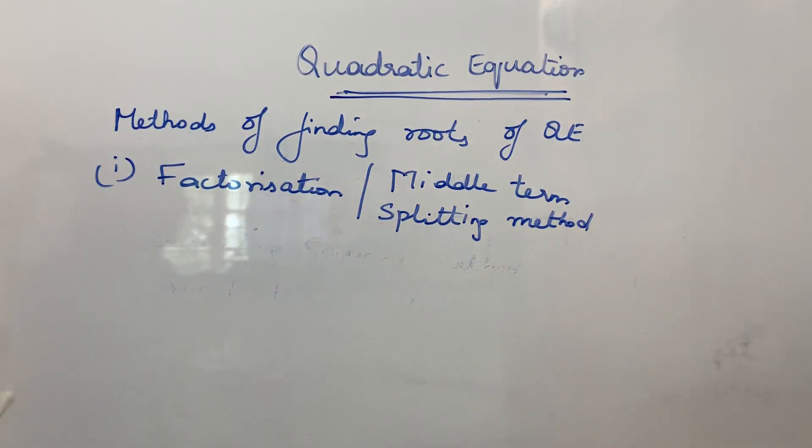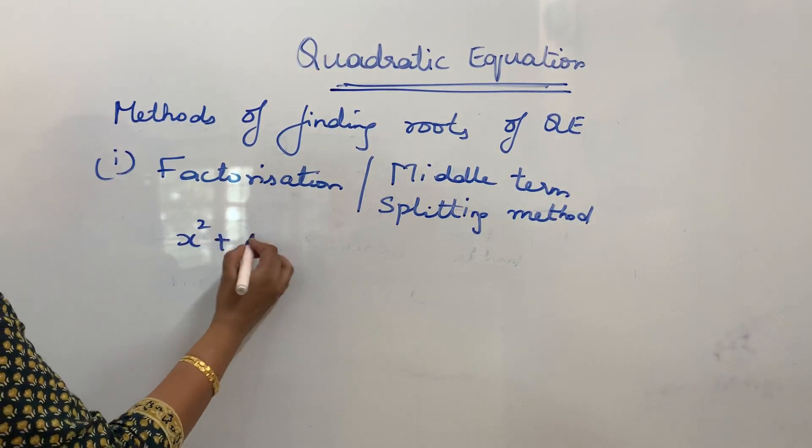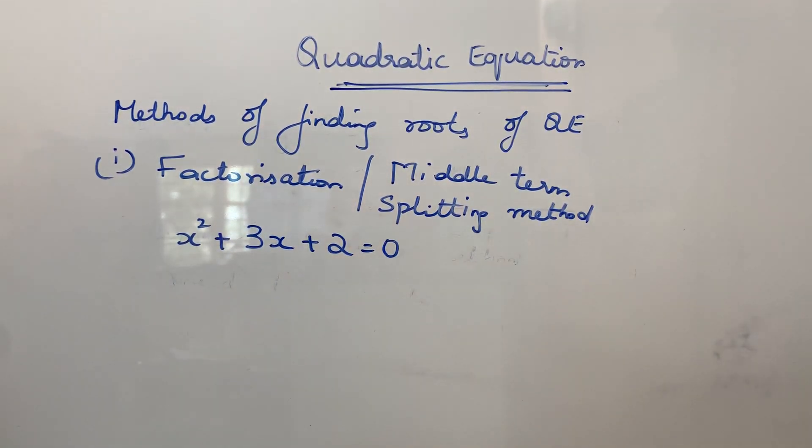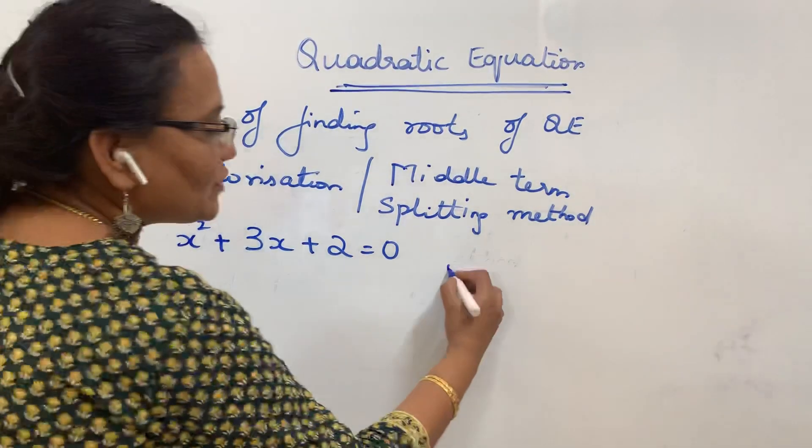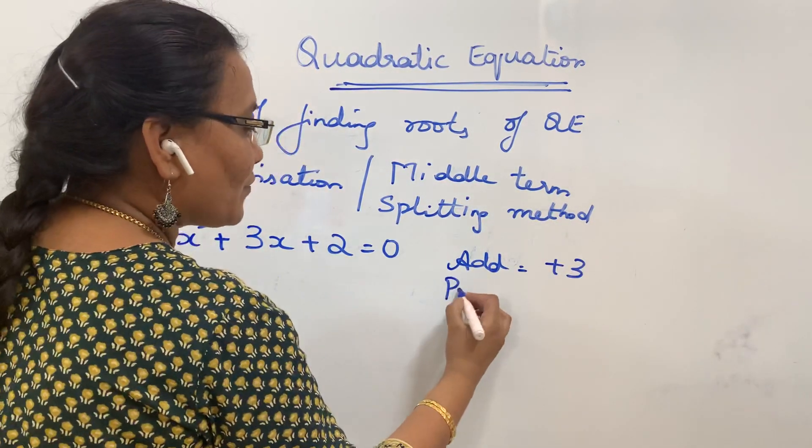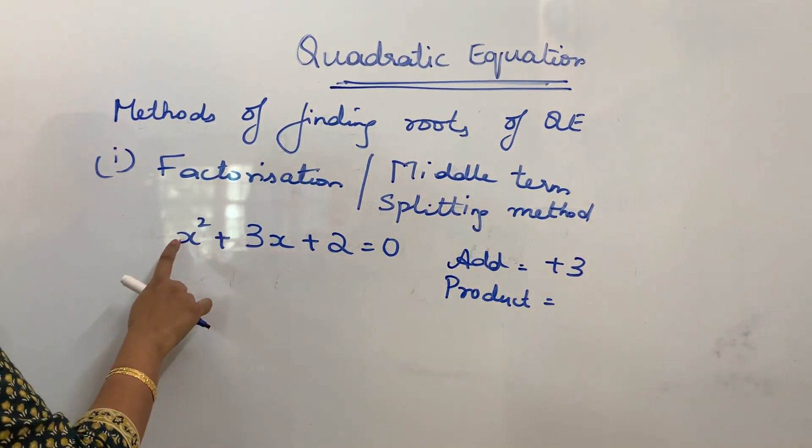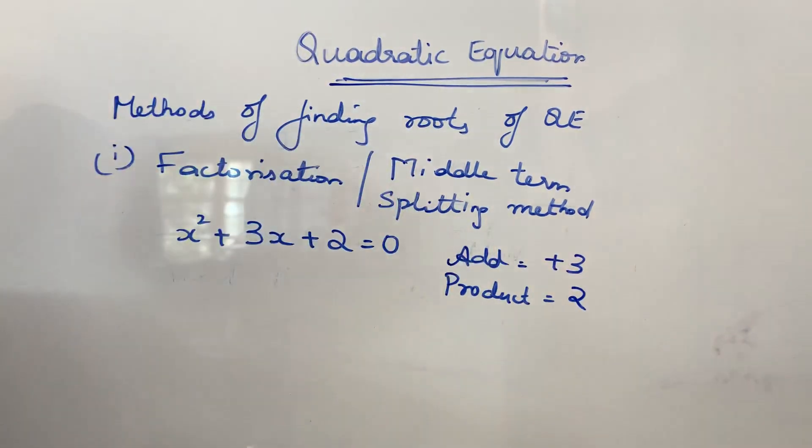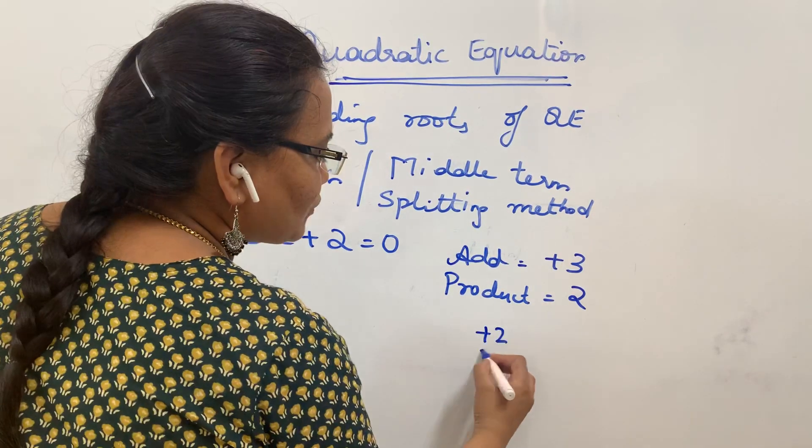I will just take some simple examples. X² + 3X + 2 = 0. Now you should find two numbers such that when you add, you should get the center value, the middle value, which is +3. And the product of the same two numbers should be the first and the last term. Product of first and last term is 1 × 2 = 2. So you have to choose two numbers such that when you add you should get +3 and the product should be 2. I will take +2 and +1.